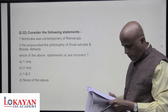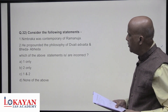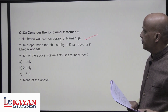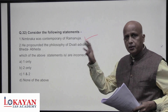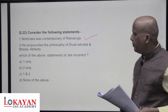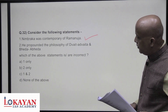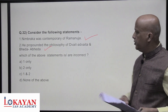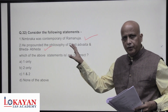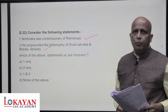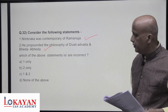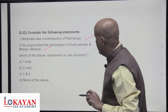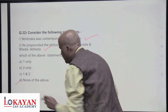Nimbarka was considered a contemporary of Ramanuja — correct. Ramanuja is a saint in South India while Nimbarka is a Bhakti saint in North India. Nimbarka propounded the philosophy of Dvaitadvaita (Bhedabheda). Ramanuja's philosophy was further developed by Nimbarka who talked about Bhedabheda. Both statements one and two are correct — none of the above is incorrect, so answer is D.